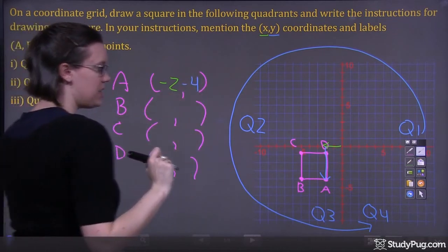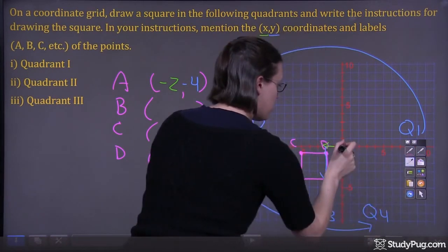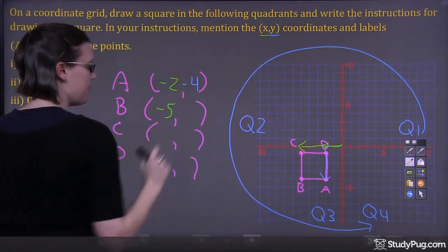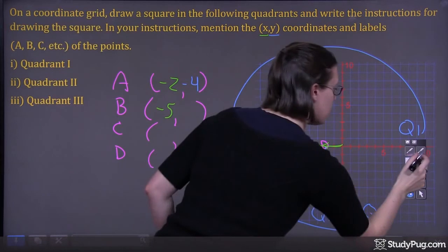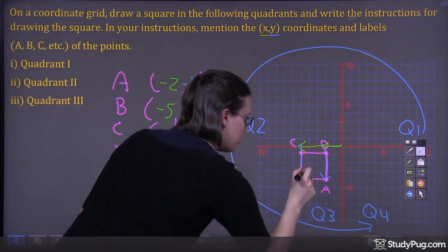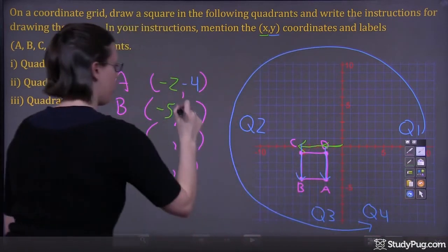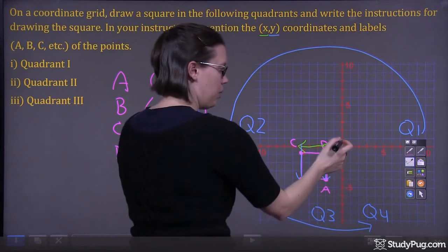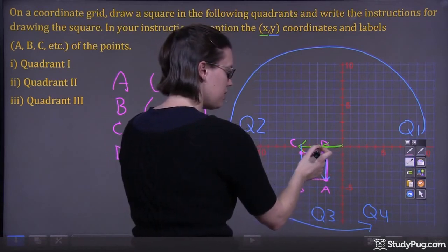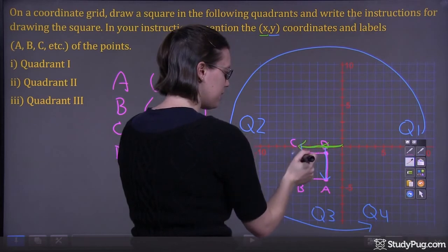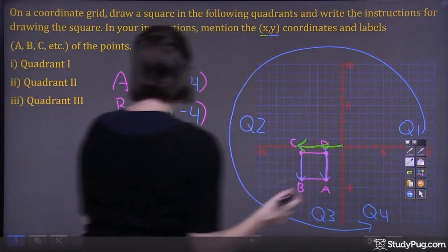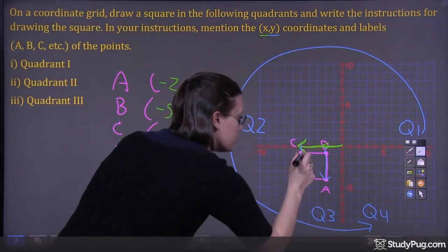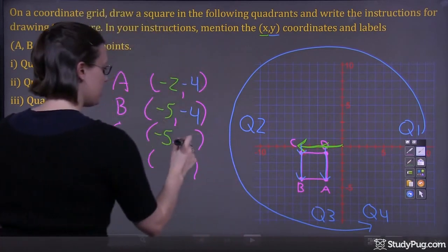Now let's focus on B. We're going to move 1, 2, 3, 4, 5 to the left — negative 5. And we're going to move 1, 2, 3, 4 down — negative 4. Now let's focus on point C. We move 1, 2, 3, 4, 5 to the left — negative 5. And we're moving just 1 down — negative 1. So C is (-5, -1).